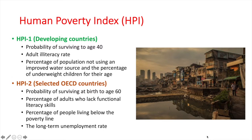Third is the Human Poverty Index, which has different indices for developing and selected OECD countries. For developing countries, HPI-1 is calculated, measuring development performance by assessing the probability of surviving to age 40 from birth, the adult illiteracy rate, the percentage of the population not using an improved water source, and the percentage of underweight children for their age. For selected OECD countries, HPI-2 is calculated, measuring the probability of surviving at birth to age 60, the percentage of adults who lack functional literacy skills, the percentage of people living below the poverty line, and the long-term unemployment rate. The index value ranges from 0 to 1, with higher performance moving an economy towards 1.